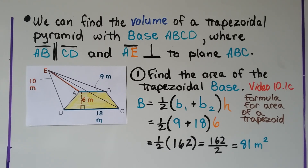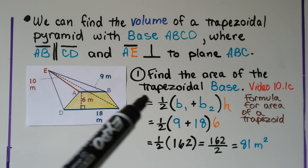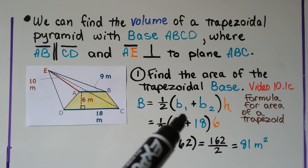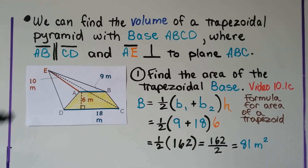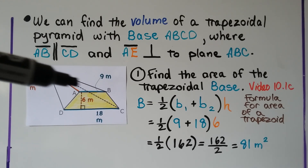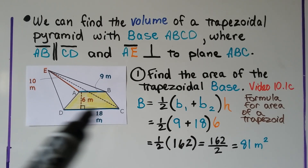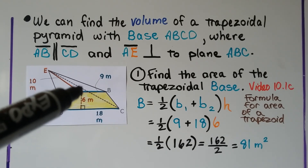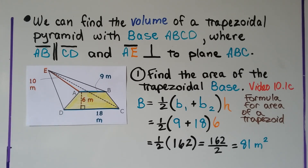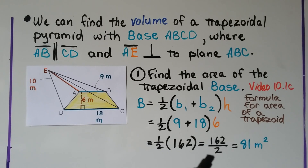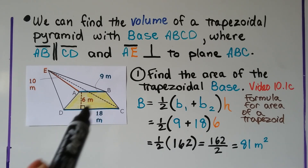We learned how to find the area of a trapezoid in video 10.1c. The formula is one-half times (base one plus base two) times the height. That's one-half times nine for AB plus 18 for segment CD, multiplied by height 6. Nine plus 18 times six is 162, and half of 162 gives us 81 meters squared. So the area of this trapezoid is 81 meters squared.